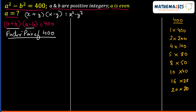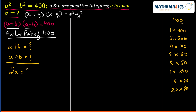So a+b is one factor and a-b is the other factor of the chosen factor pair. Now, if we add these two equations, b and b cancel out and we get 2a equals the sum of the two factors. Solving further, a equals that sum divided by 2.